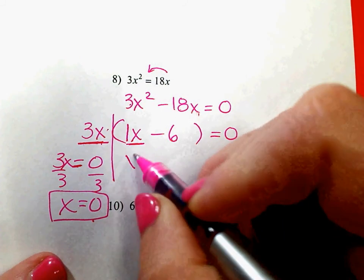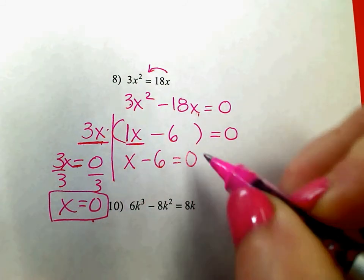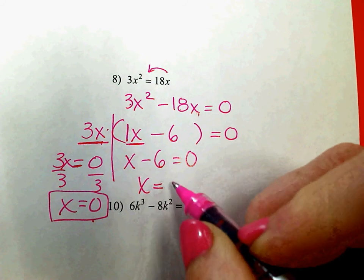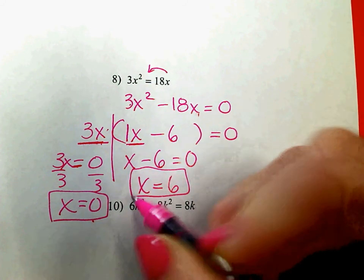This answer, if x minus 6 is 0, then the value of x that makes that true is x equals positive 6.